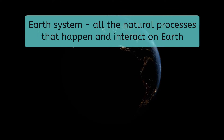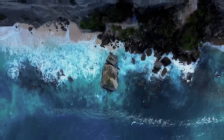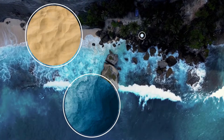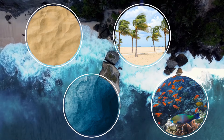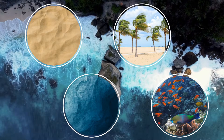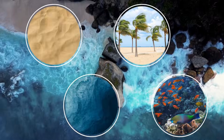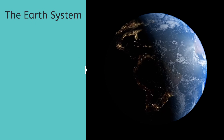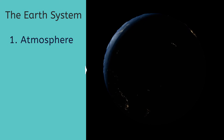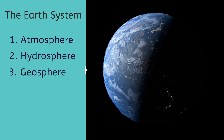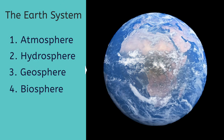The Earth system is all of the natural processes that happen and interact on Earth. But think back to the beach example. Although the sand, water, winds, and sea life were all connected, do you think they're influenced by the same processes? The different parts of a beach are representative of different parts within the Earth system, and each is shaped by its own unique set of processes. The Earth system is made of four smaller systems called spheres that are each distinct but connected: the atmosphere, the hydrosphere, the geosphere, and the biosphere. These four systems work together to form the entirety of the Earth system.